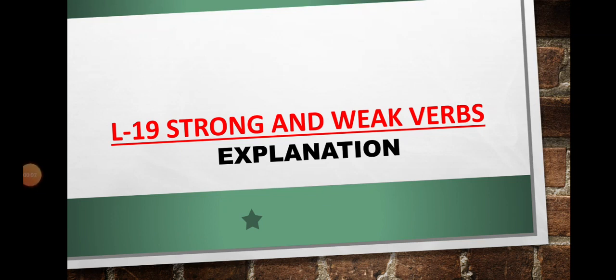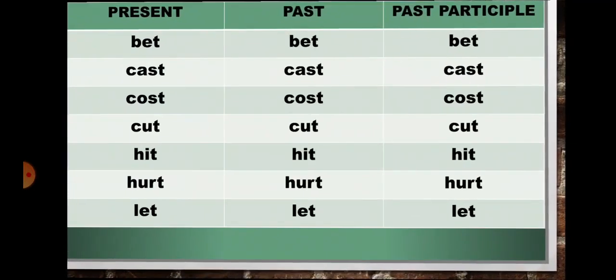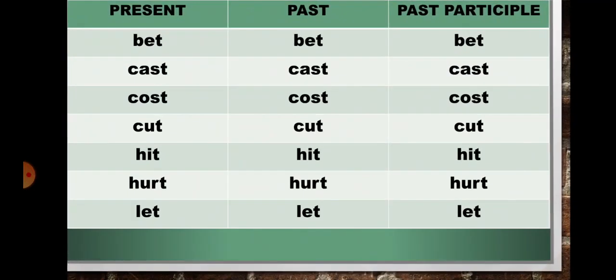Good morning students. Let us start with English grammar lesson number 19: strong and weak verbs. Today we will continue with the list of weak verbs, but this time in present, past, and past participle form. All three will remain the same — there will be no change.